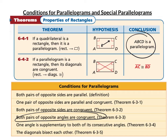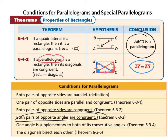If a parallelogram is a rectangle, then its diagonals are congruent. To see why, consider triangle BAD and triangle CDA. Those triangles are congruent because it's a parallelogram — opposite sides are congruent — and the two triangles share side AD and each has a right angle. Since the triangles are congruent, diagonals BD and AC are corresponding parts of congruent triangles, so they must be congruent. Therefore, the diagonals of a rectangle are congruent.